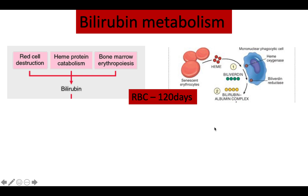Senescent erythropoiesis refers to red blood cells which are about to die or are inactive. Once they are broken down, they give off two components: heme and globin. Globin is an amino acid molecule; when it breaks down, it forms various amino acids which are re-uptaken into the bone marrow and can be used again for production of new red blood cells.